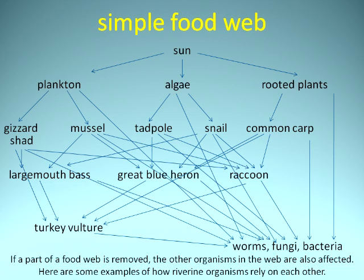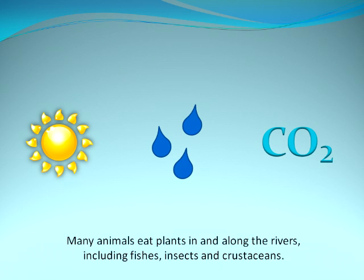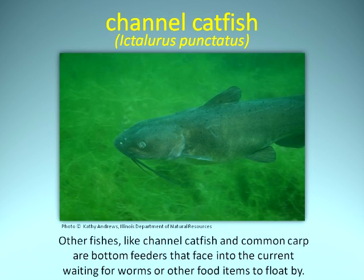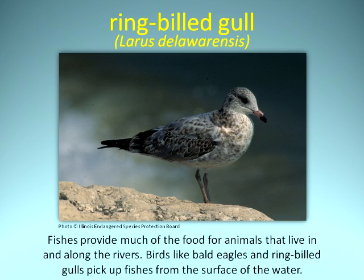Here are some examples of how river organisms rely on each other. Plants and algae make their own food through photosynthesis thanks to sunlight, water, and carbon dioxide. The oxygen they release is used by all living organisms. Many animals eat plants in and along the rivers, including fishes, insects, and crustaceans. Fishes like gizzard shad, river carp sucker, and bigmouth buffalo eat plant materials and plankton, which are microscopic life forms. Other fishes like channel catfish and common carp are bottom feeders that face into the current waiting for worms or other food items to float by. Some fishes like white bass, black crappie, and sauger are predators that eat other fishes, for example, spottail shiners. Fishes provide much of the food for animals that live in and along the rivers.